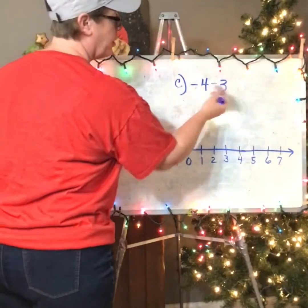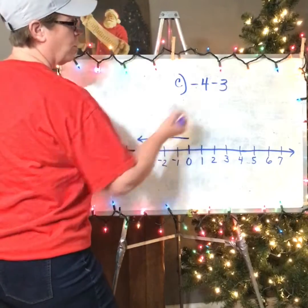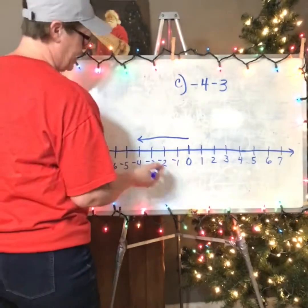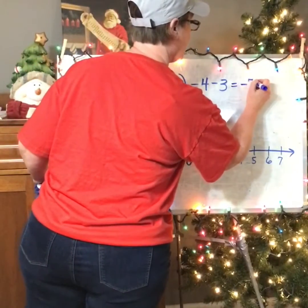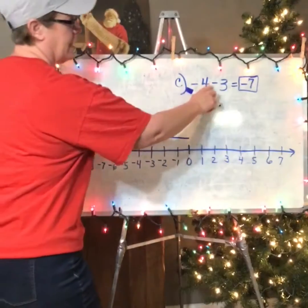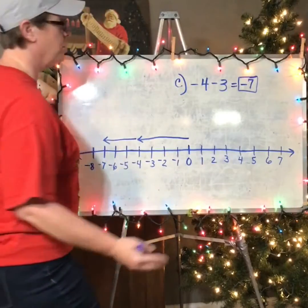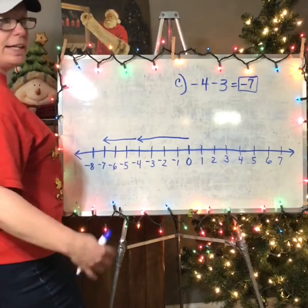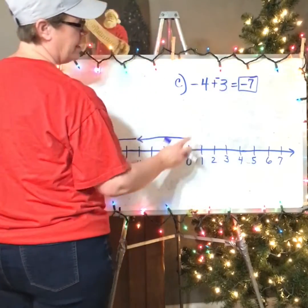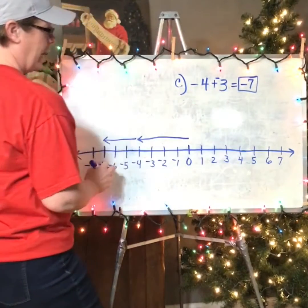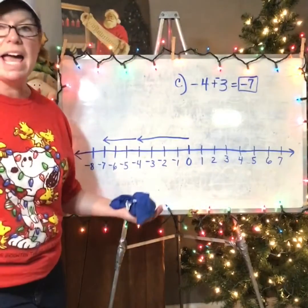4C is negative 4 minus 3. I'm going to start at negative four, then take away three more, which pulls me back three more spots. I end up at negative seven. That makes sense — like temperature: if it's negative four degrees and it drops three more degrees, it's even colder at negative seven. But even if I don't see that, subtraction is the same as adding the opposite: I start at negative four, add three more negatives, still end up at negative seven.